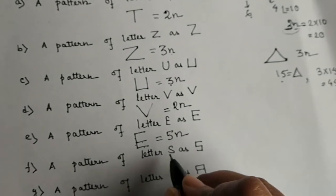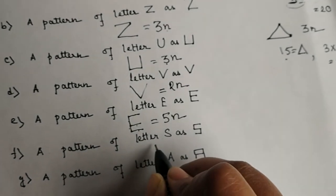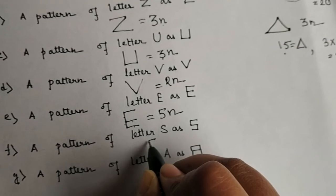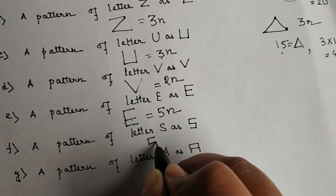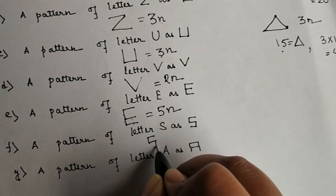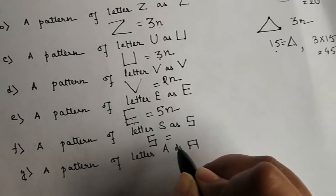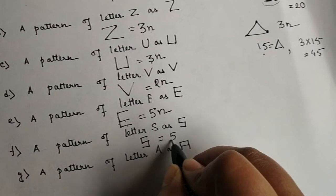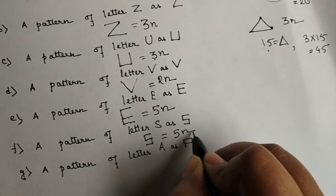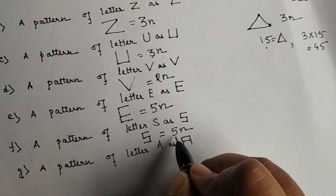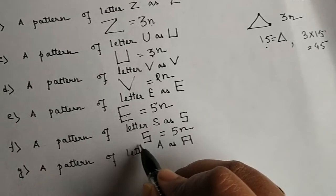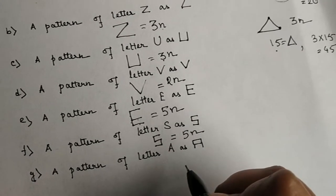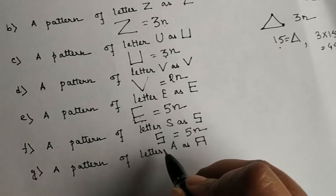In the next one, we have the letter S. Counting: 1, 2, 3, 4, 5 — total 5 mastics are used to form S. So the rule will be 5 into n, where 5 is the number of mastics in one alphabet and n is the number of S's we have.